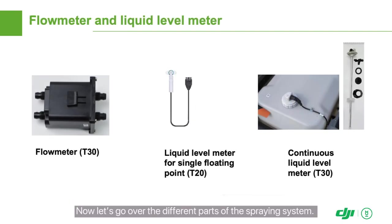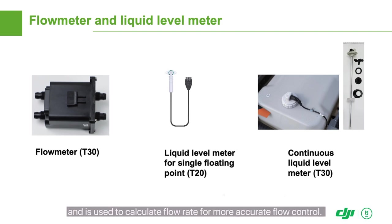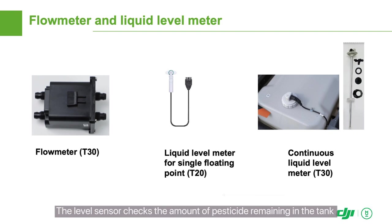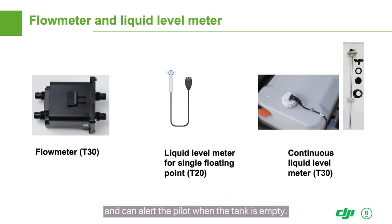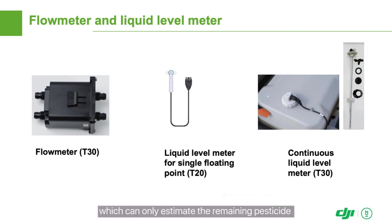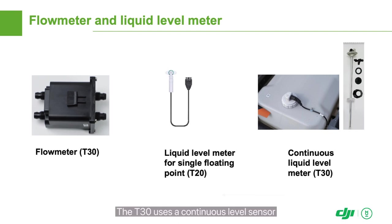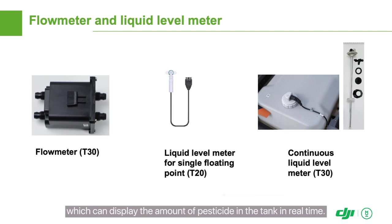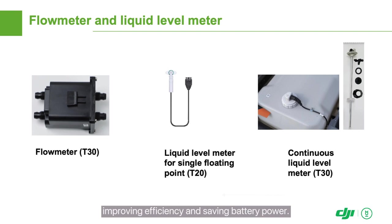The flow meter is located between the tank and the water pump and is used to calculate flow rate for more accurate flow control. The level sensor checks the amount of pesticide remaining in the tank and can alert the pilot when the tank is empty. The T-10, T-16, and T-20 have a single point level sensor, which can only estimate the remaining pesticide and can't display the exact remaining amount. The T-30 uses a continuous level sensor, which can display the amount of pesticide in the tank in real time and can intelligently predict when the tank will need to be refilled, improving efficiency and saving battery power.